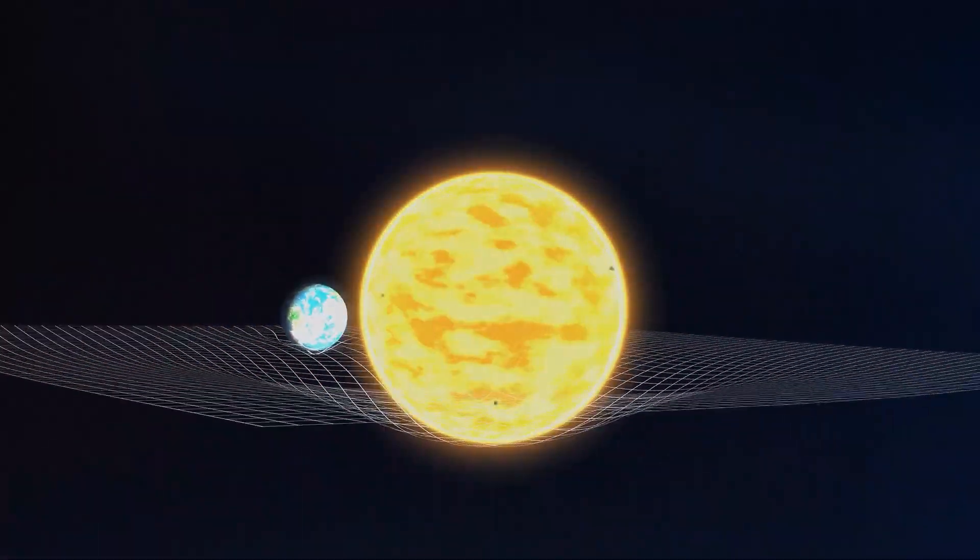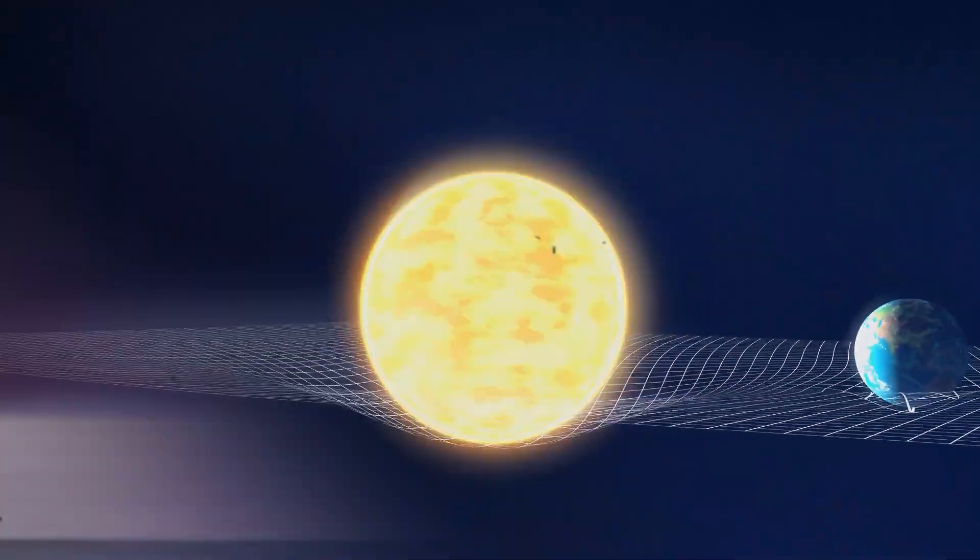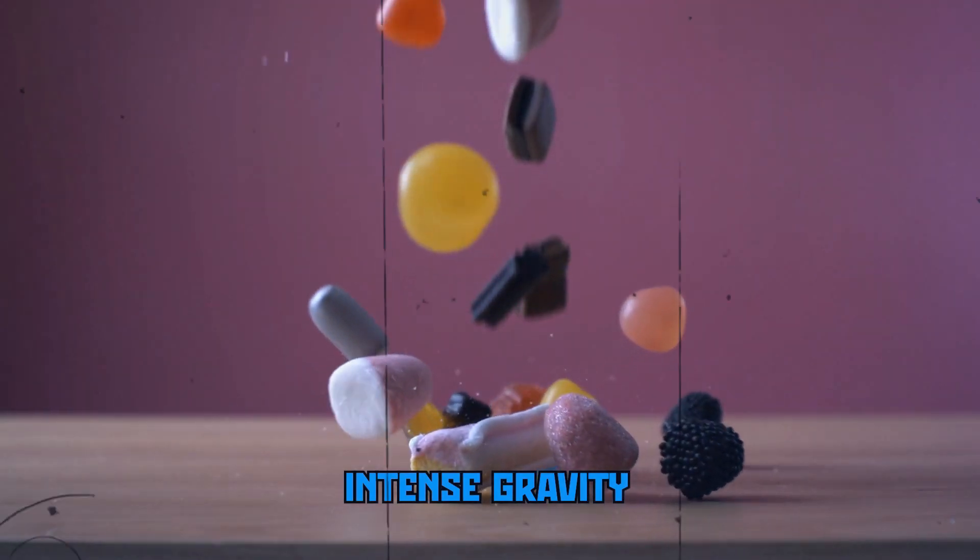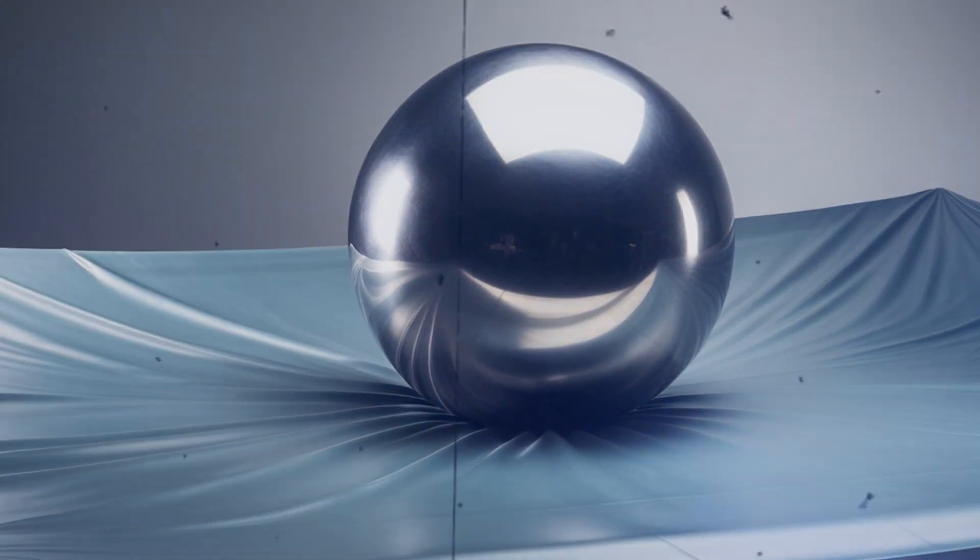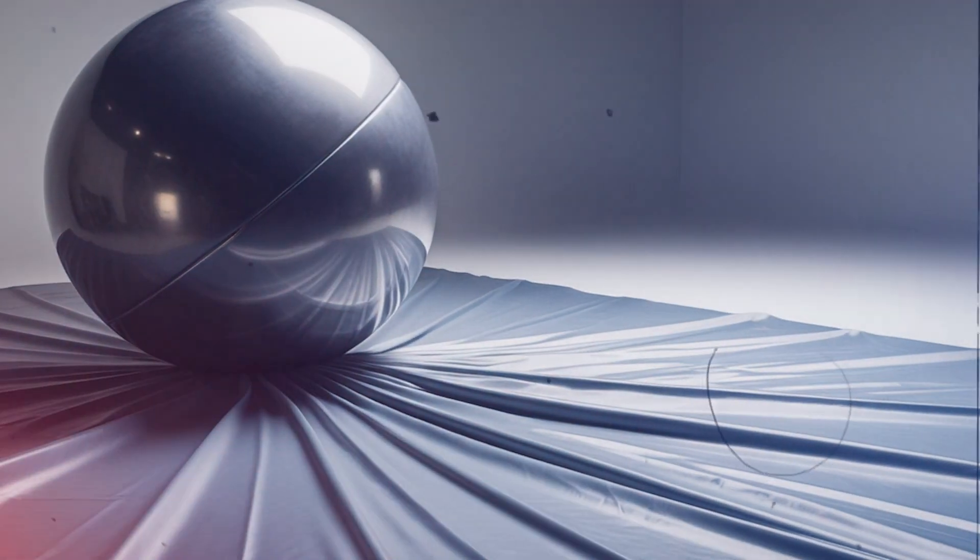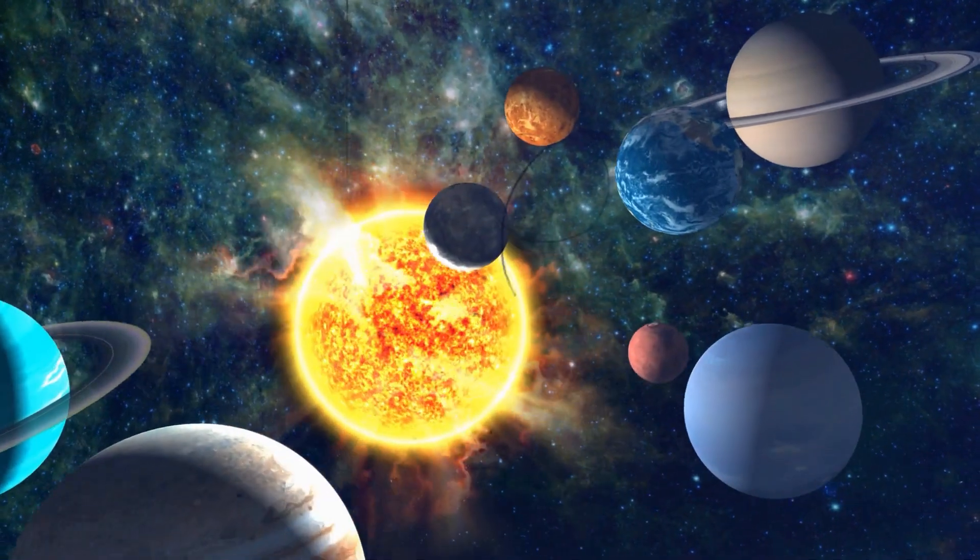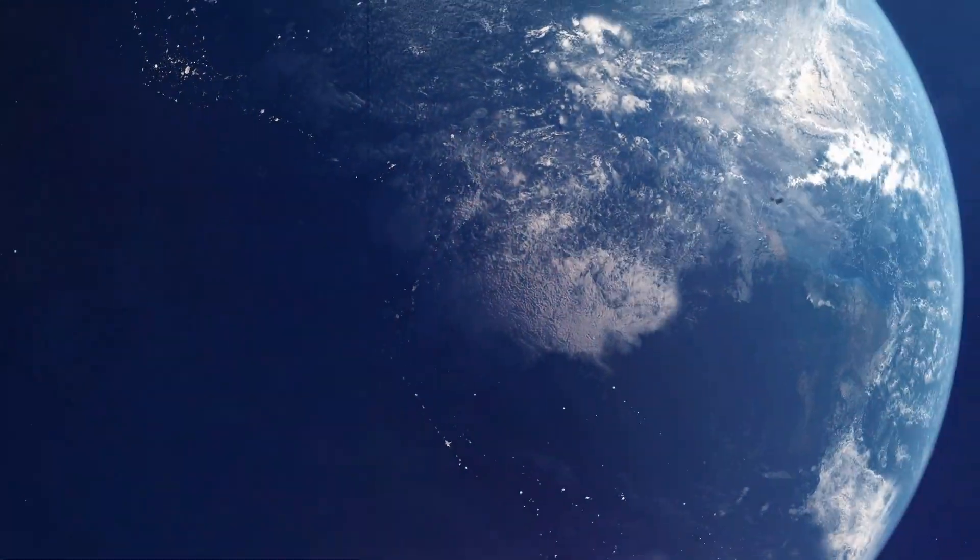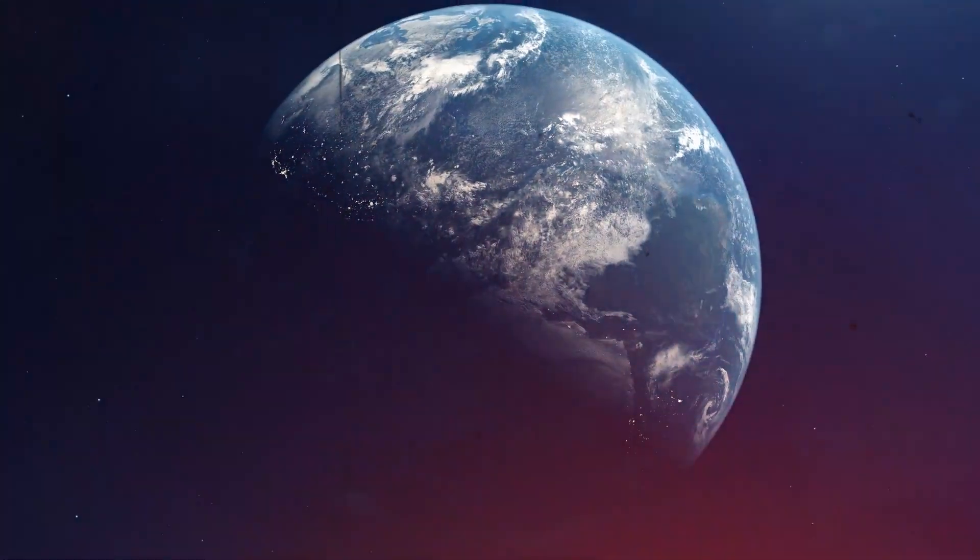The Earth's gravity bends and warps space and time, slowing down the flow of time in areas with intense gravity. Imagine a heavy ball sitting on a stretched rubber sheet. The ball causes the sheet to sag around it. Similarly, Earth's mass creates a curve in space and time, causing time to slow down as you get closer to the Earth.